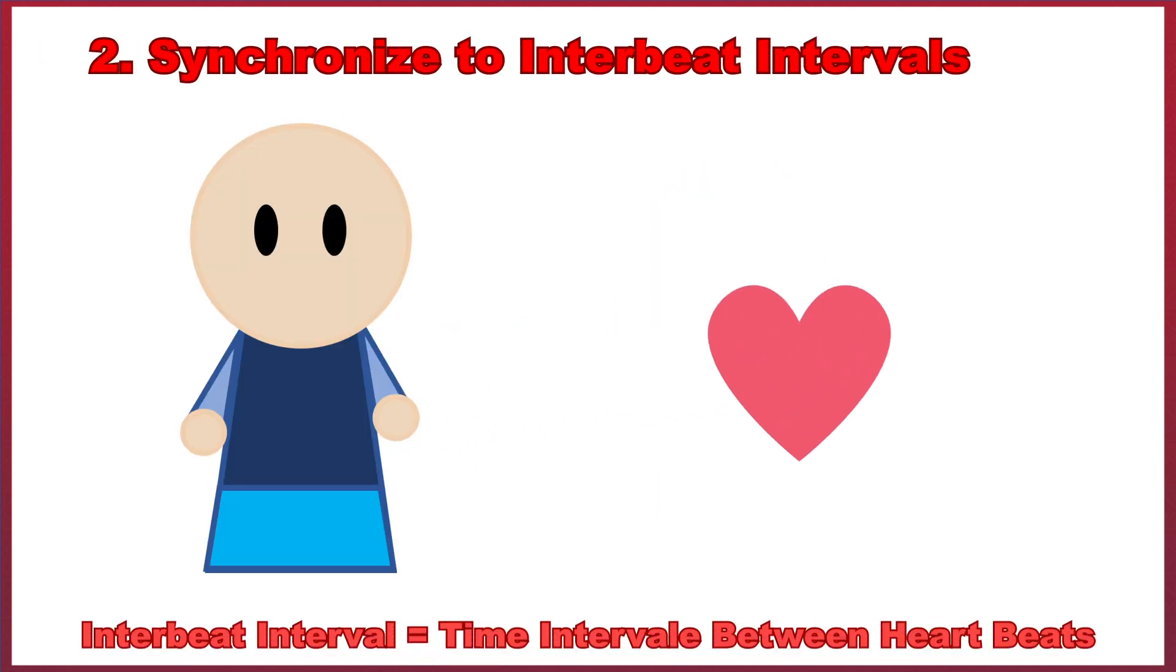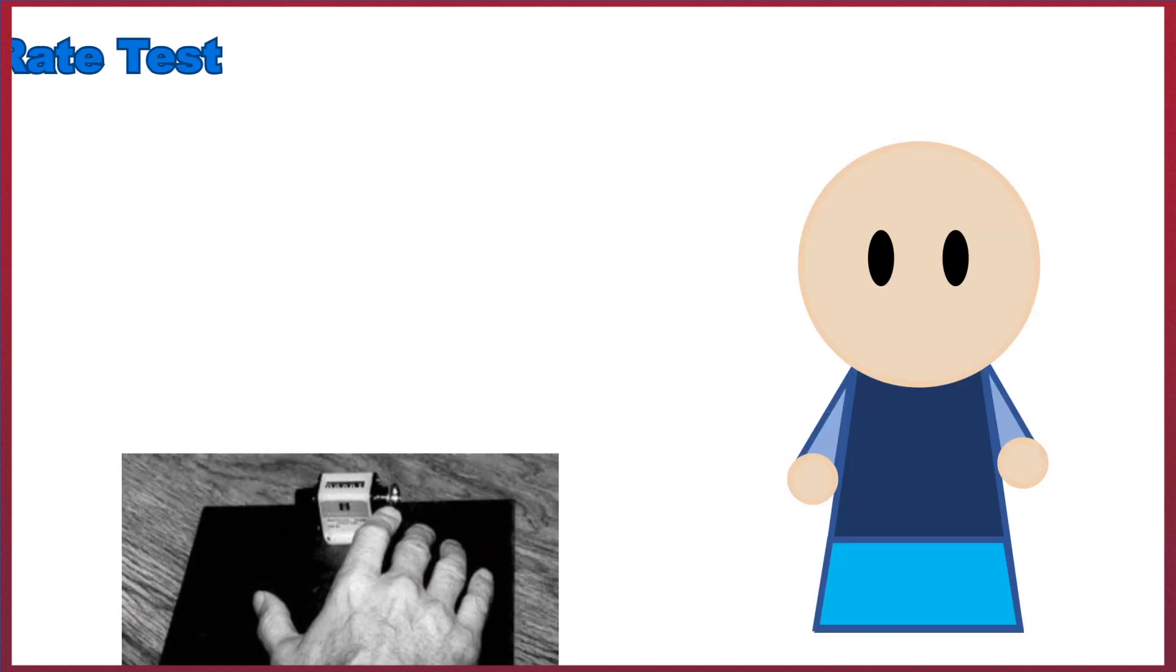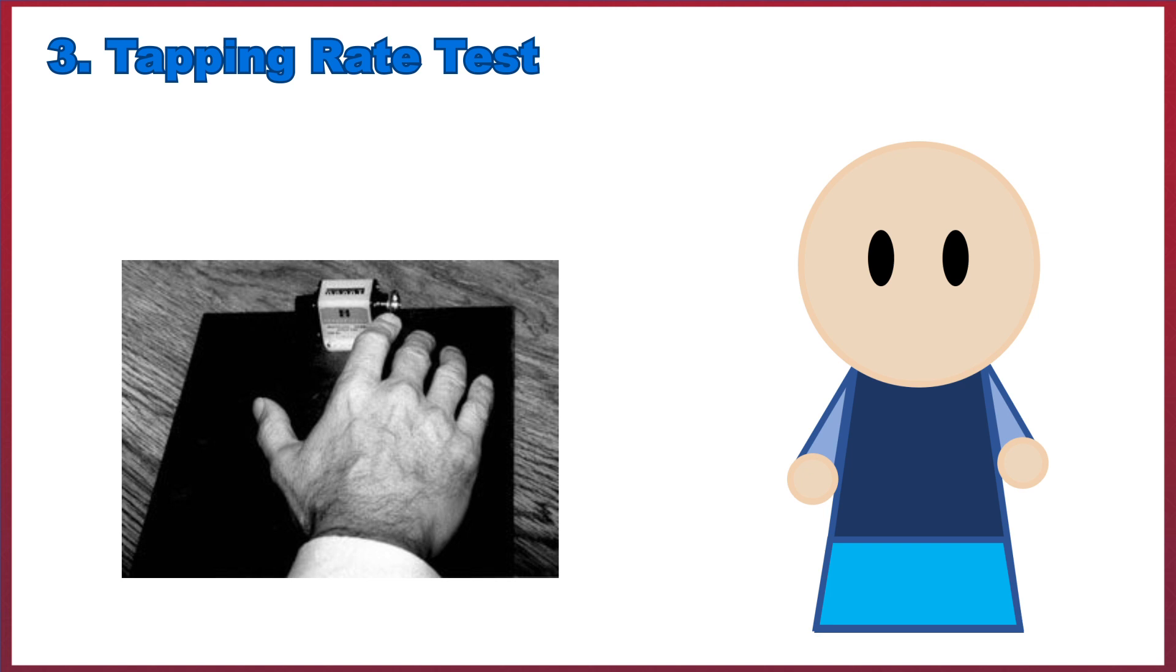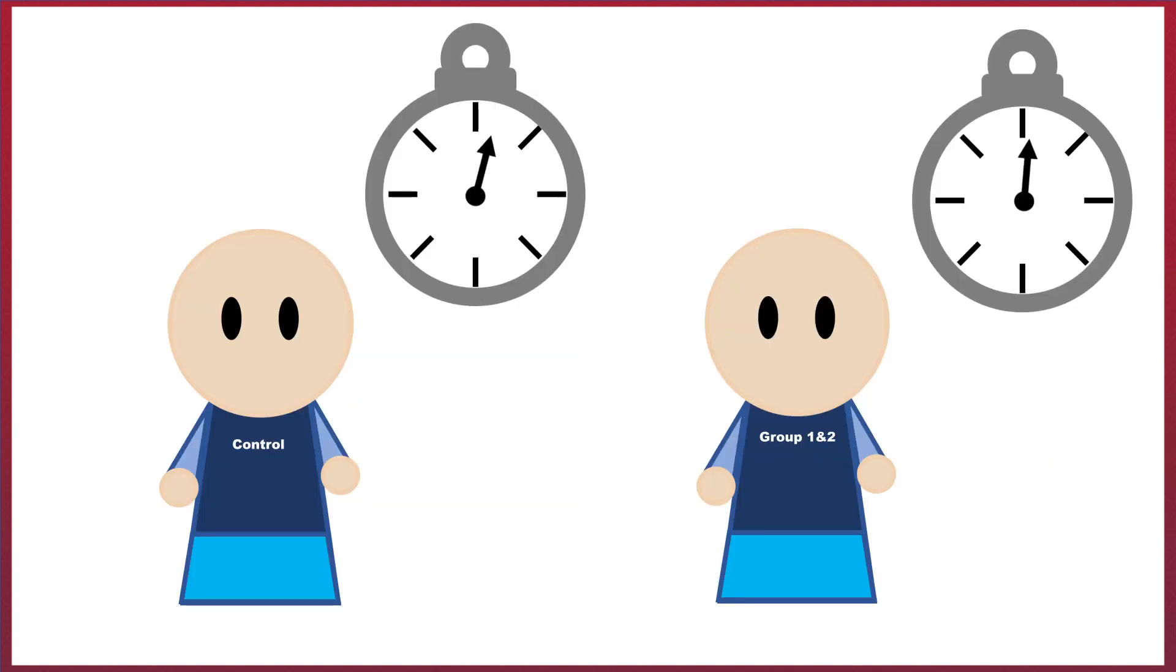The first task was a test where subjects had to reproduce interval durations of increasing lengths. The second task was a test to examine subjects' abilities to synchronize to inter-beat intervals. And a third task was a tapping rate test, a test which evaluates the tapping speed of fingers and the time taken between each tap.